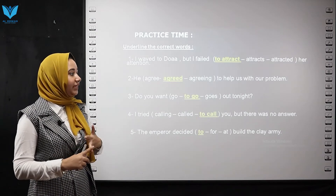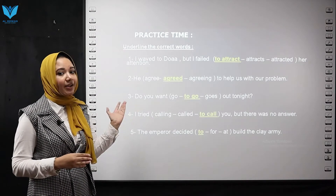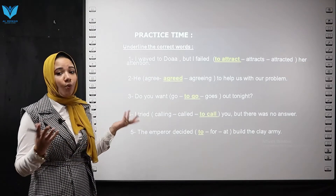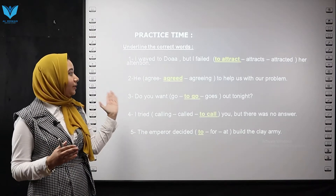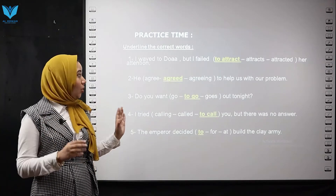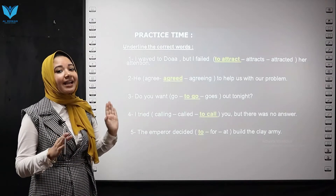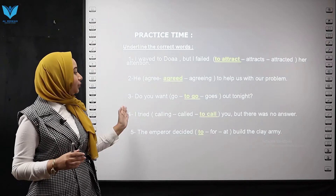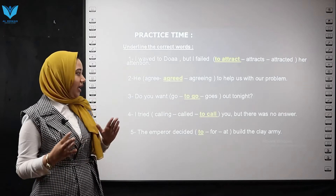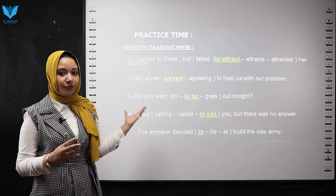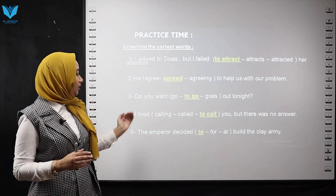Number two: He agree / agreed / agreeing to help us with our problem. The answer is 'agreed.' Why not 'agree'? In present simple with 'he,' we add 's,' so it would be 'agrees.' That's wrong here, so we choose 'agreed.' Number three: Do you want — go / to go / goes — out tonight? After 'want,' we use 'to' plus the base form, so I choose 'to go.'